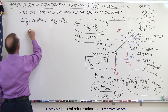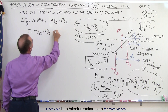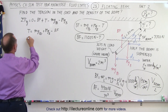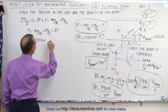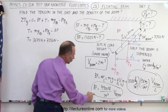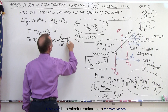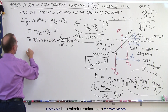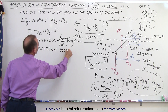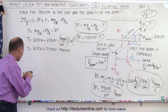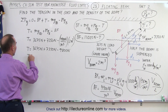We can then find the tension. The tension is therefore equal to the weight of the lead plus the weight of the beam minus the buoyancy force. Plugging in: the tension is equal to the weight of the lead which was 3675 newtons, plus the weight of the beam which was 7350 newtons, minus the buoyancy force of 4900 newtons per cubic meter times the volume of the beam which was 2 cubic meters. That means the tension is equal to 3675 plus 7350 minus 9800, which equals 1225 newtons.